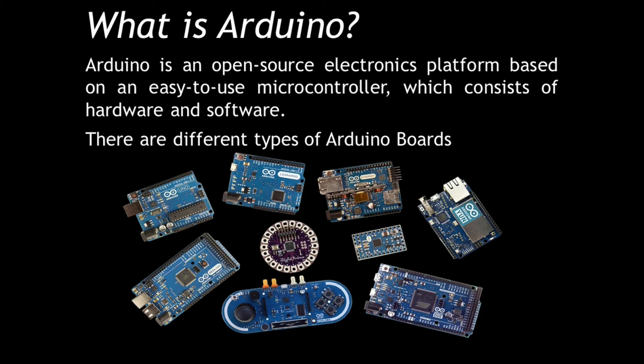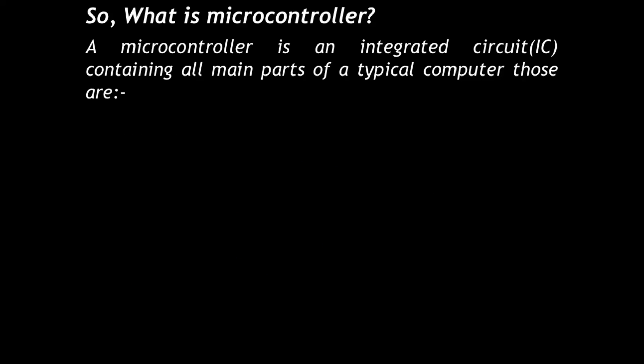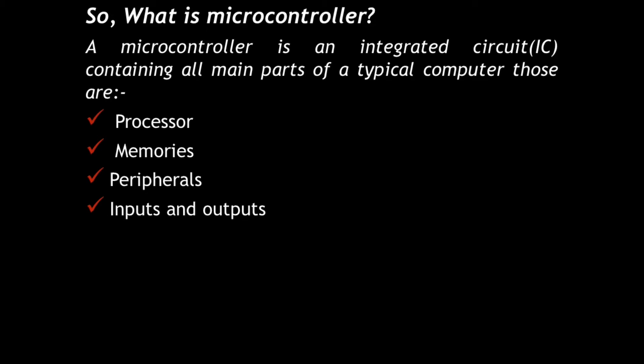If we say Arduino is a microcontroller, then what is a microcontroller? A microcontroller is an integrated circuit or IC containing all main parts of a typical computer. Those are: the processor — the main part, also known as the brain of the microcontroller; memory — consisting of RAM and ROM like ordinary computers; peripherals — any auxiliary device used with the microcontroller; and inputs and outputs — the way of communication between the microcontroller and the real world or environment.